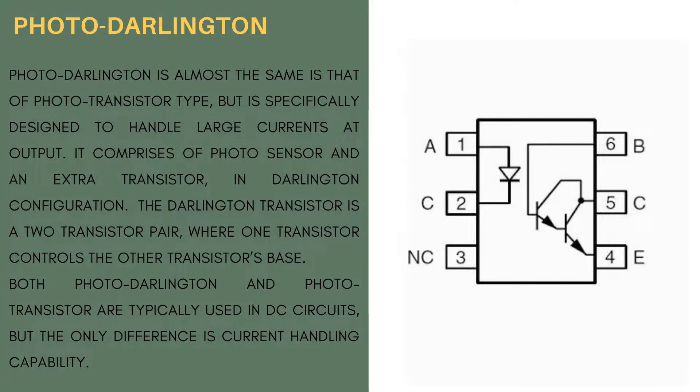The Darlington transistor is a two-transistor pair, where one transistor controls the other transistor's base. Both photo-Darlington and photo-transistor are typically used in DC circuits, but the only difference is current handling capability.